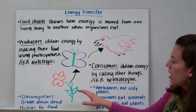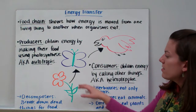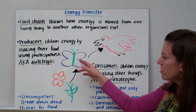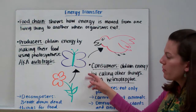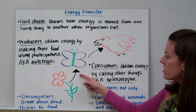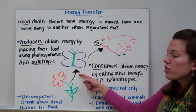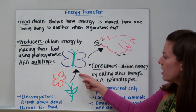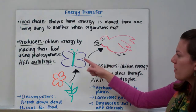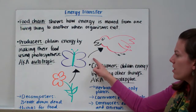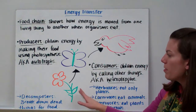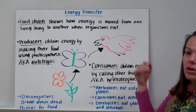Let's look at a food chain. This is a flower. Butterflies drink nectar from flowers, so we're going to say the butterfly eats the flower. We show an arrow pointing to the thing that's getting the energy — whatever's doing the eating, the arrow points to that. Then a bird might eat the butterfly, so the arrow points to the bird. Energy is moving from the flower to the butterfly to the bird.